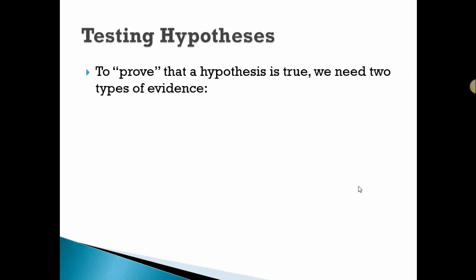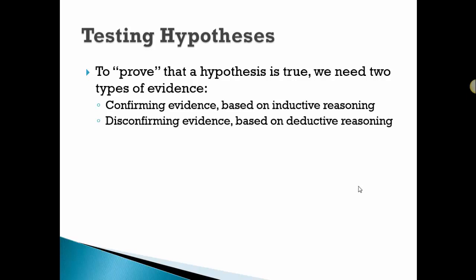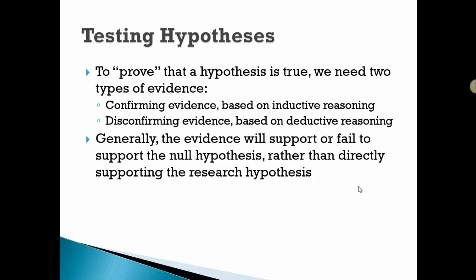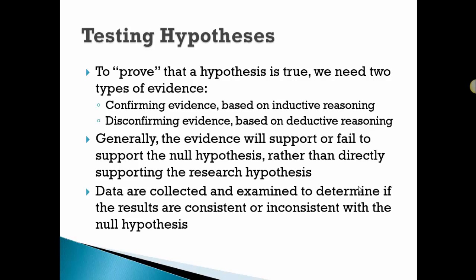To prove a hypothesis is true, we need two types of evidence: confirming, which is based on inductive, and disconfirming, which is based on deductive. Generally, the evidence will support or fail to support the hypothesis rather than directly supporting the research hypothesis, because really what we set out to do is prove or disprove the null. Data are collected and examined to see if the results are consistent or inconsistent with the null.